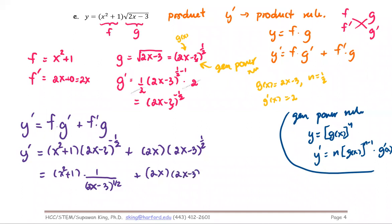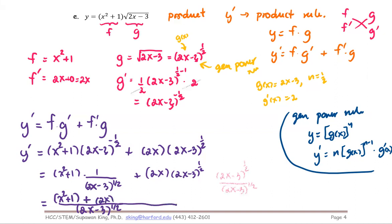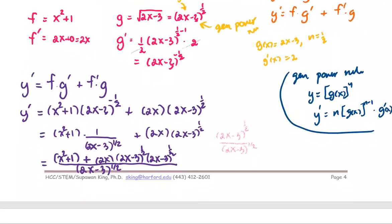The second term stays as a product. Then treat them like adding fractions with different denominators: multiply the second fraction by (2x minus 3)^(1/2) over (2x minus 3)^(1/2). Both terms now share the common denominator (2x minus 3)^(1/2). The first numerator stays as x squared plus one, and the second term involves multiplying 2x by (2x minus 3)^(1/2) times another factor of (1/2), combining exponents to give power one.